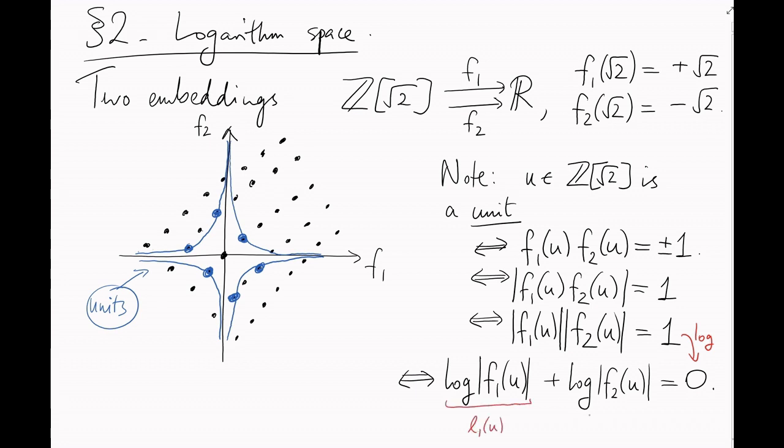Let's call these numbers L1 of u and L2 of u. So u is a unit if and only if L1 of u plus L2 of u equals 0.